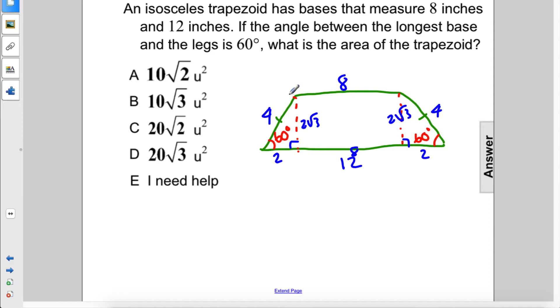Alright, so what is the area of this trapezoid? Area equals 1/2, the average of the bases, b1 plus b2, times height.